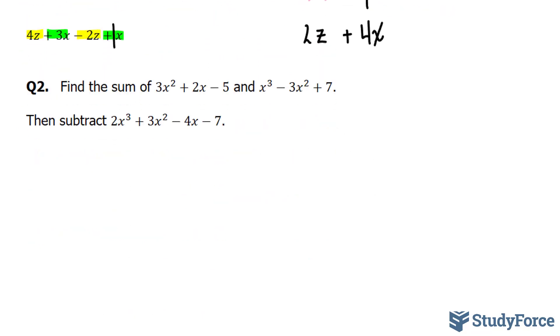In question number 2 they ask, find the sum of 3x squared plus 2x minus 5 and x to the power of 3 minus 3x squared plus 7. Then subtract by the expression written here. Let's go ahead and add this and this together. We have 3x squared plus 2x minus 5 all being added to this expression.